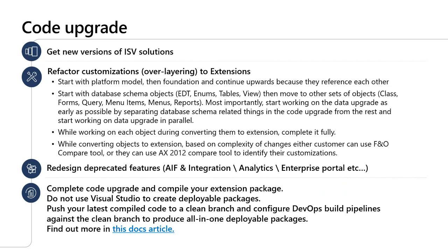Developers need to refactor customizations from overlays into extensions. Recommended approaches: start with platform models, then foundation, and continue upwards because they reference each other. Start with database schema objects like EDTs, enums, tables, and views, then move to other objects: classes, forms, queries, menu items, menus, and reports. Most importantly, start working on the data upgrade as early as possible by separating database schema-related code upgrade items and working on data upgrade in parallel. Complete each object fully when converting. Use the FNO compare tool or the AX 2012 compare tool to identify customizations based on complexity. Redesign deprecated features such as AIF integrations, analytics, and Enterprise Portal — these take time to design and implement, so starting early helps.